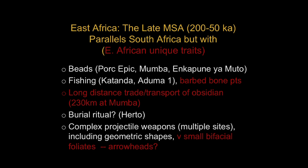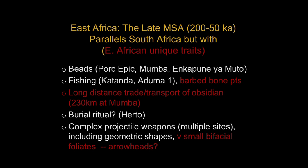We also have possible burial rituals at Herto at 160,000 years ago. We have complex projectile weapons at multiple sites, including geometric shapes. What's distinctive about the East African ones is the very widespread and persistent existence of very small bifacial foliates — little leaf-shaped points that resemble North American arrowheads — and we think they actually were, in all likelihood, arrowheads.